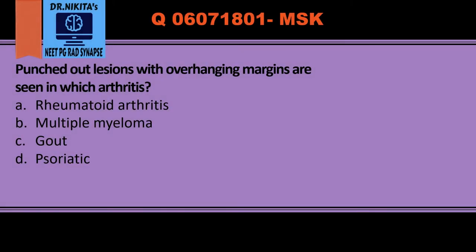Lesions with overhanging margins are seen in which arthritis? Please remember that the question is asking about arthritis — do not get confused with multiple myeloma. We do see punched out lesions in the skull in multiple myeloma, but here it is punched out lesions with overhanging margins in arthritis. So multiple myeloma is out because it is not an arthritis.